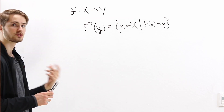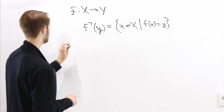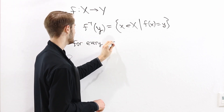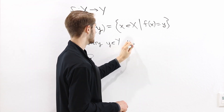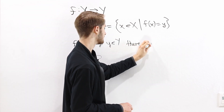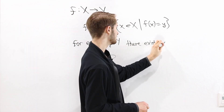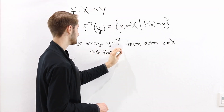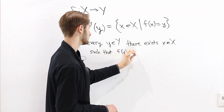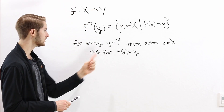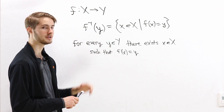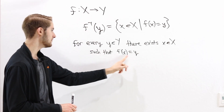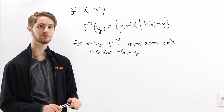We say that a function is surjective if, for every output y in the codomain, there exists some input x from the domain such that f of x equals y. So for every output in the codomain, there's at least one element of the domain that maps to it under the function f.